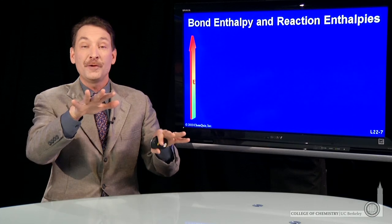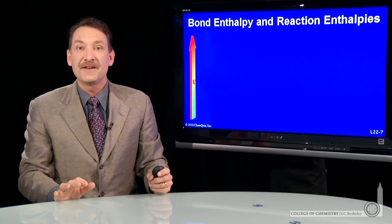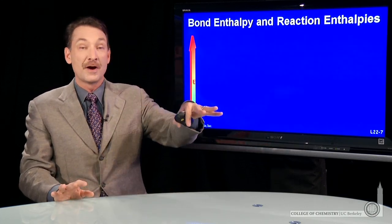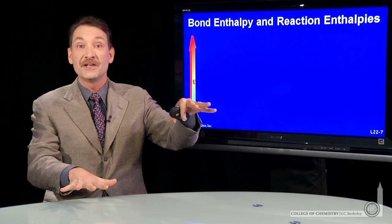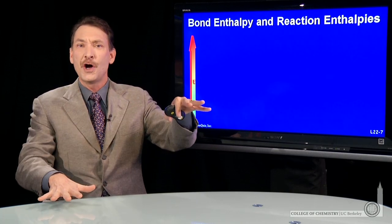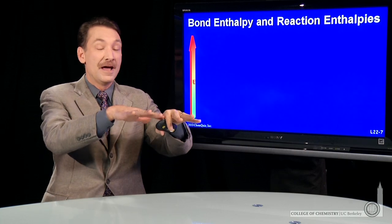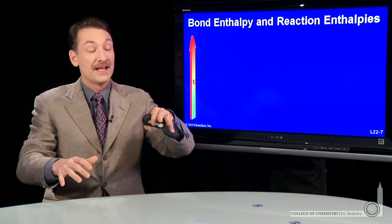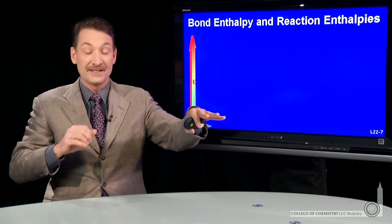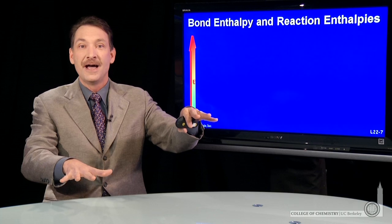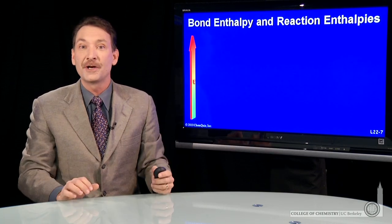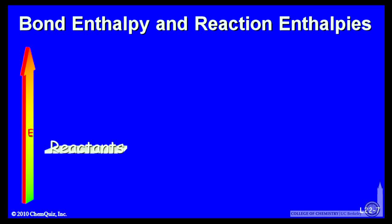Either way, the enthalpy of a reaction is a state function. It only depends on where I start and where I finish, and not the pathway to go between the products and the reactants. That means I can imagine different pathways, and as long as I start at reactants and end at products, I can sum enthalpies to get the enthalpy for the overall reaction.